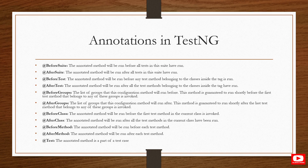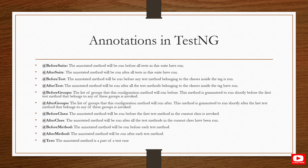The annotations in TestNG are very understandable: @BeforeSuite, @AfterSuite, @BeforeTest, @AfterTest, @BeforeGroups, @AfterGroups, @BeforeClass, @AfterClass, @BeforeMethod, @AfterMethod, and @Test. The @Test annotation is where you write your main test conditions or scenarios. The before/after annotations are used for pre and post conditions. @BeforeSuite runs before all tests are triggered, and @AfterSuite runs after all tests have completed.